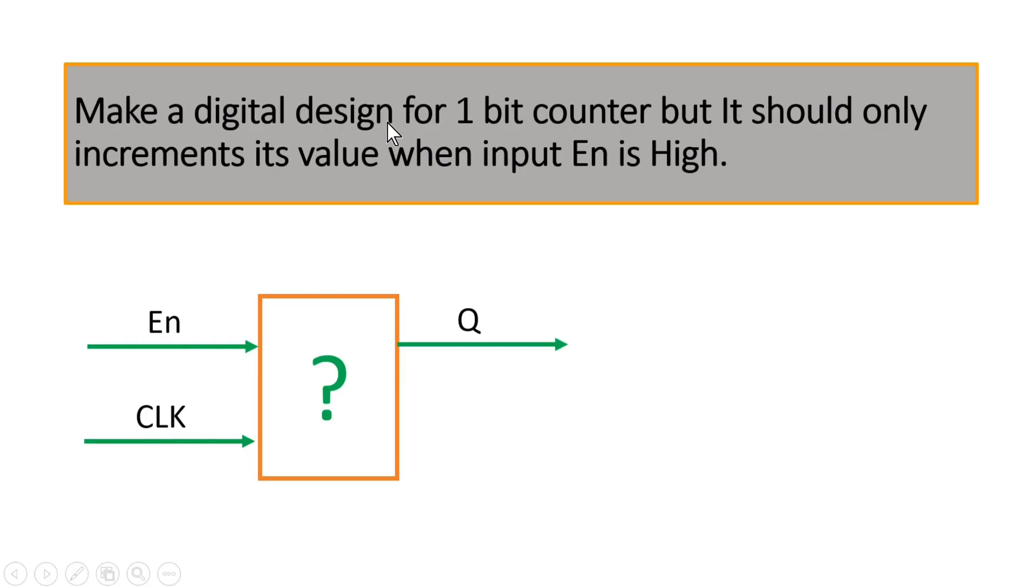To design a digital design for a 1-bit counter, but it should only increment its value when the input enable signal is high. So you have to fill this black box. Now you have one extra input that is enable. So when this enable is high, then only your counter should increment. That means your Q should increment. When it is zero, it should hold its previous value.